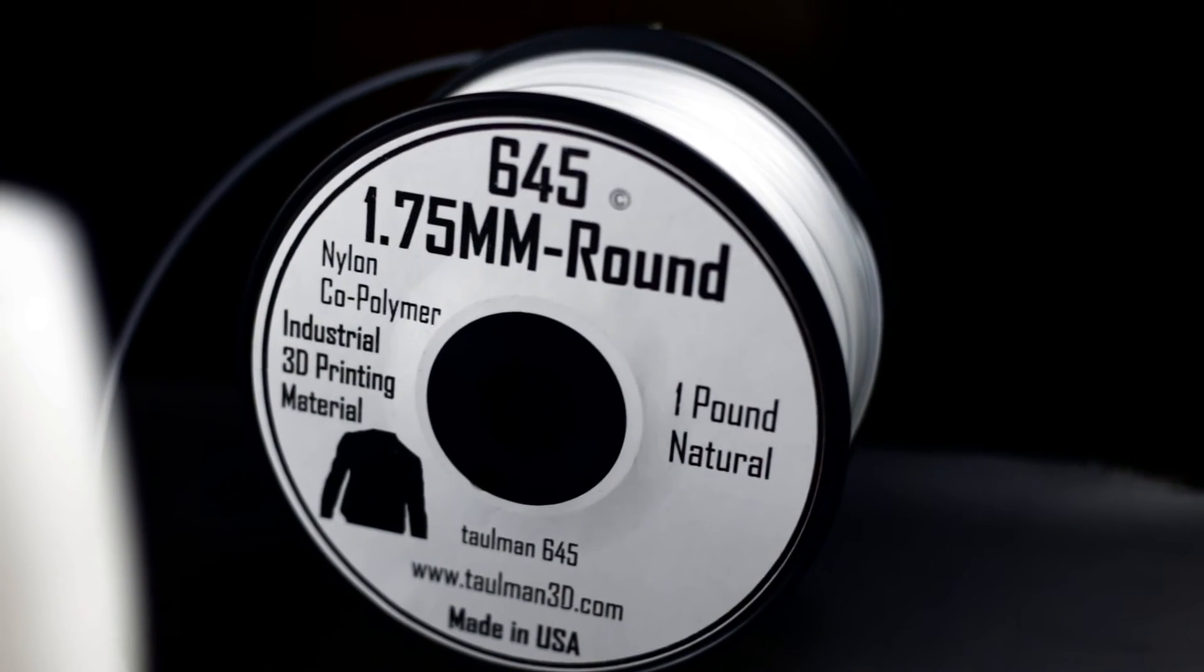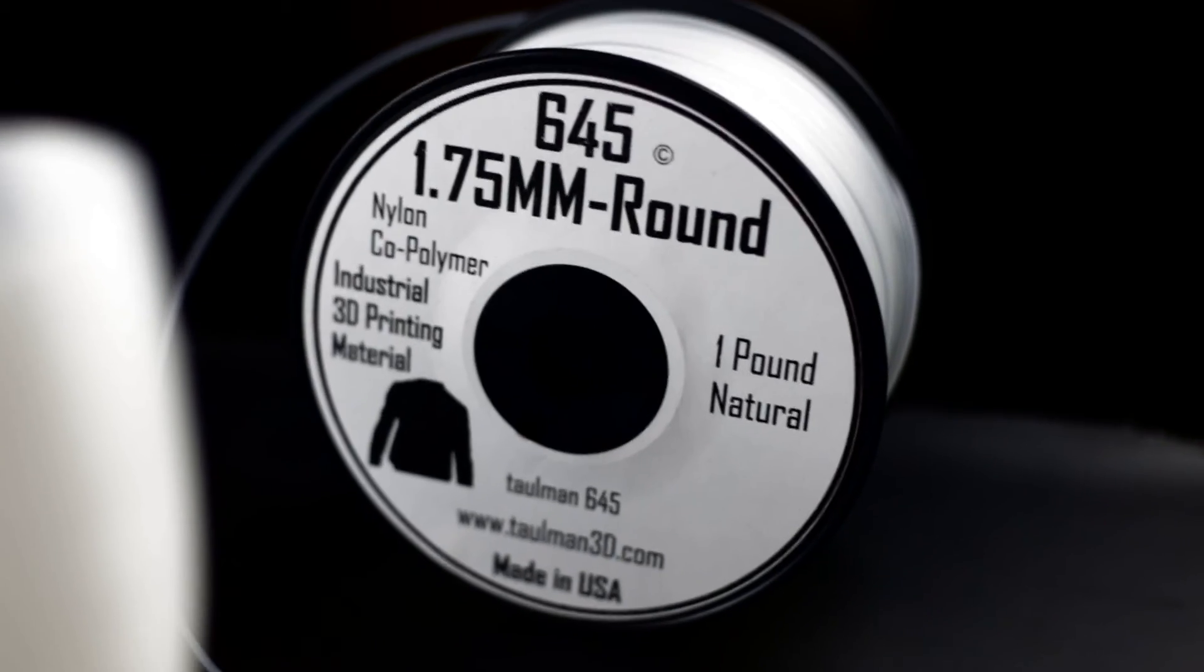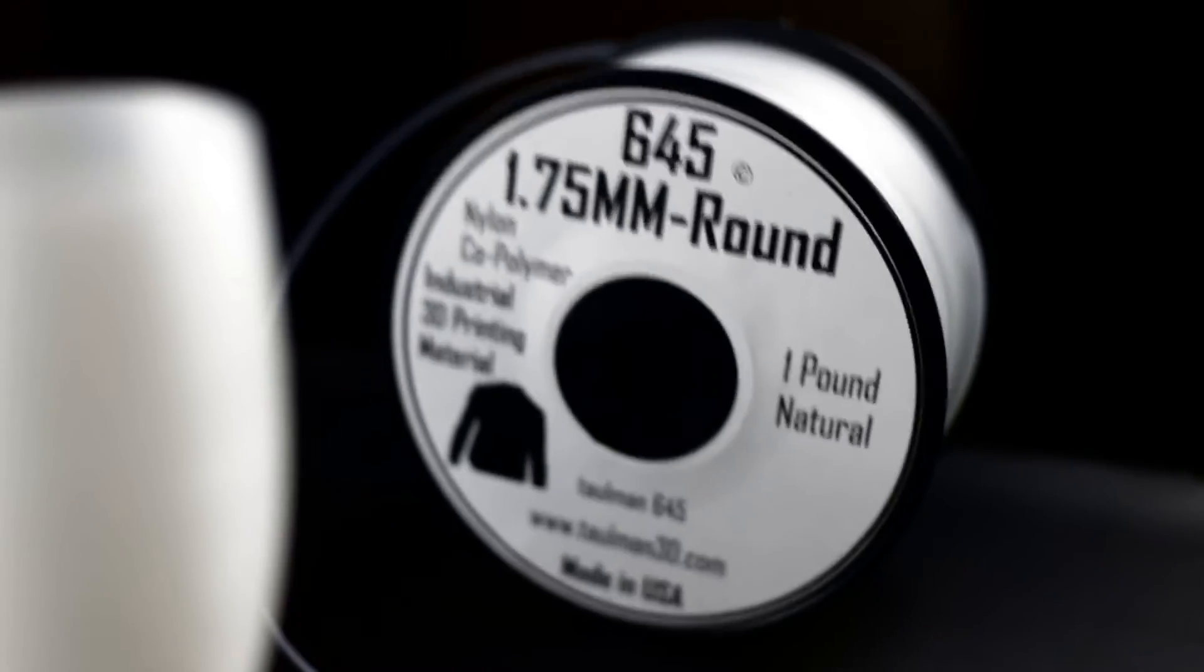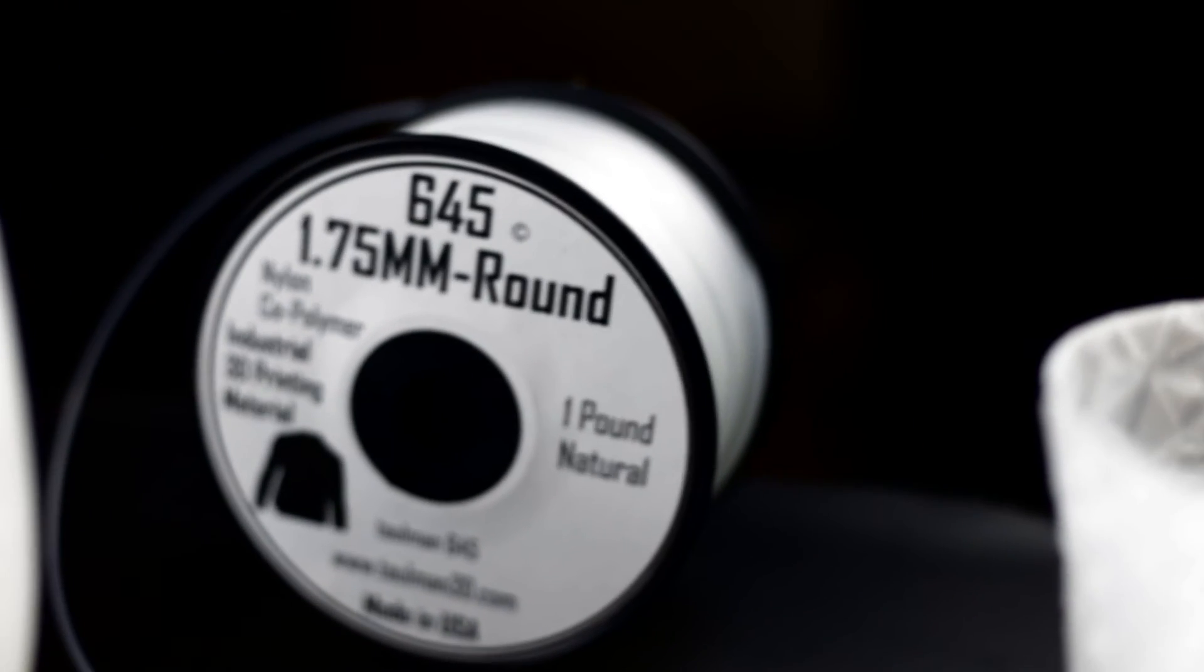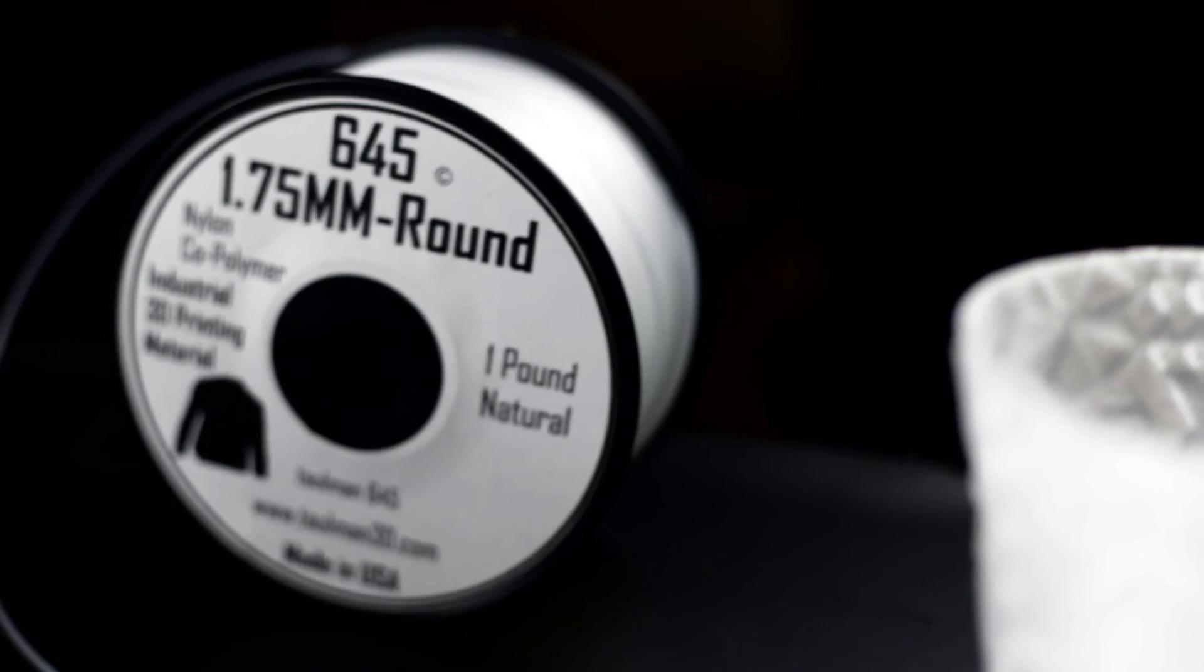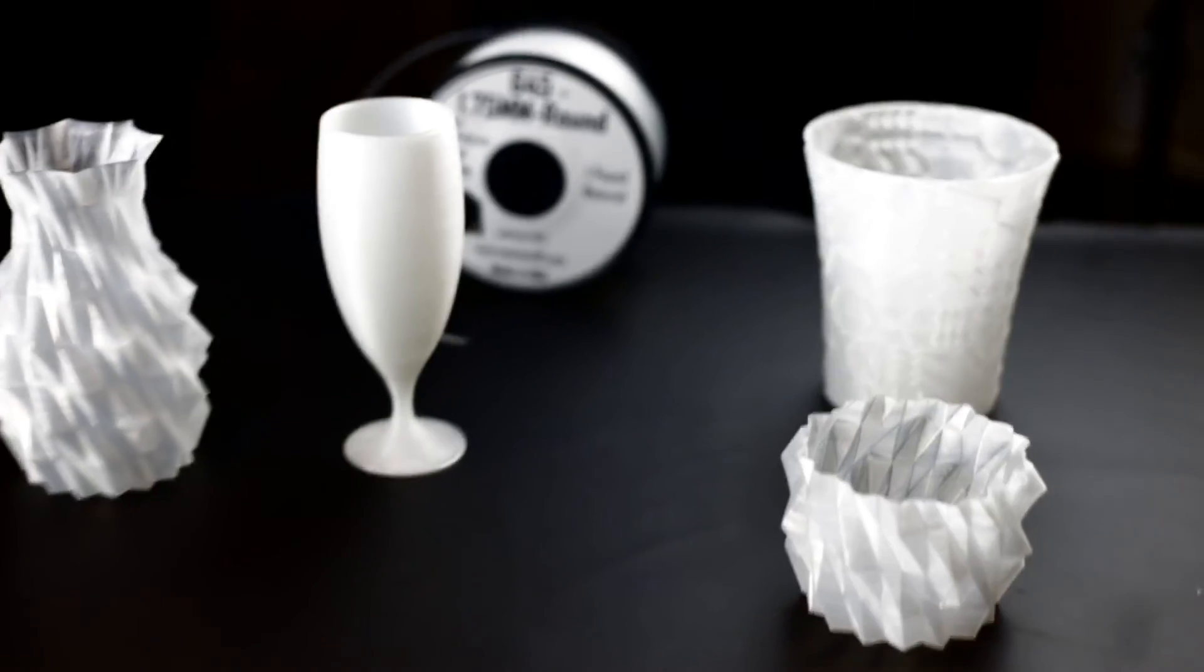So here you have one of the spools. This is Talman 645. It's a nylon. You can read all about the specs in the description. It's really good material. You just have to notice that you need another spool holder if you're using a standard size, like for Replicator 2 or 2X.